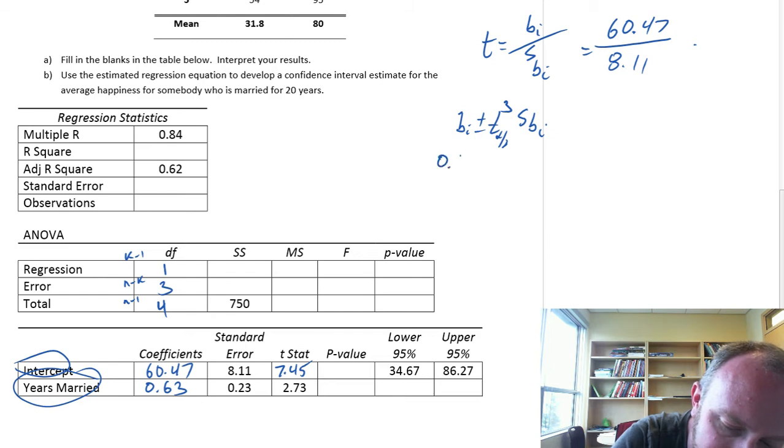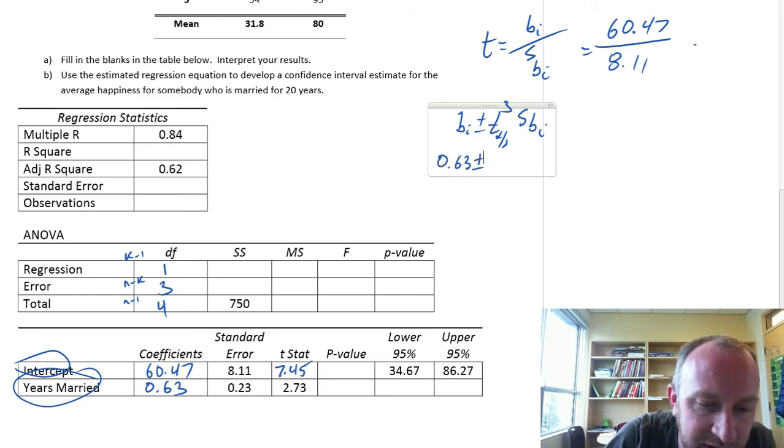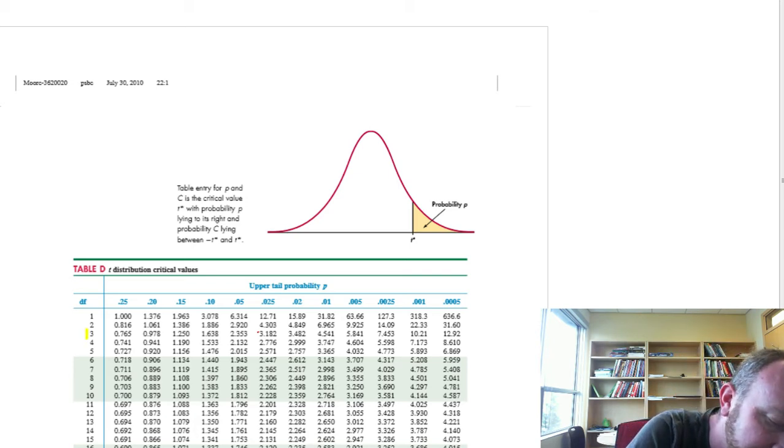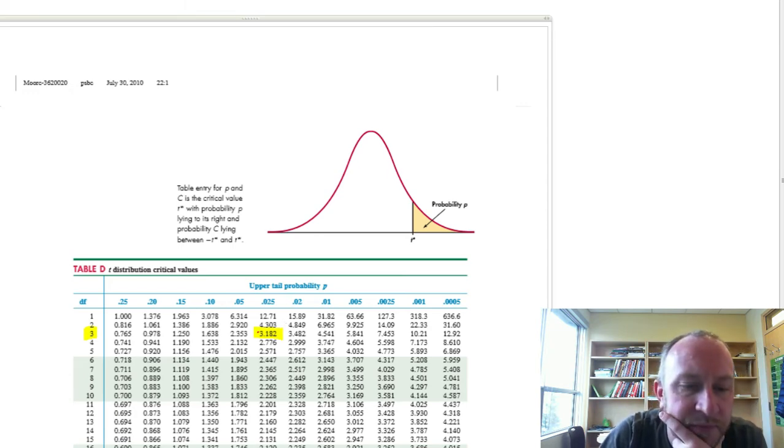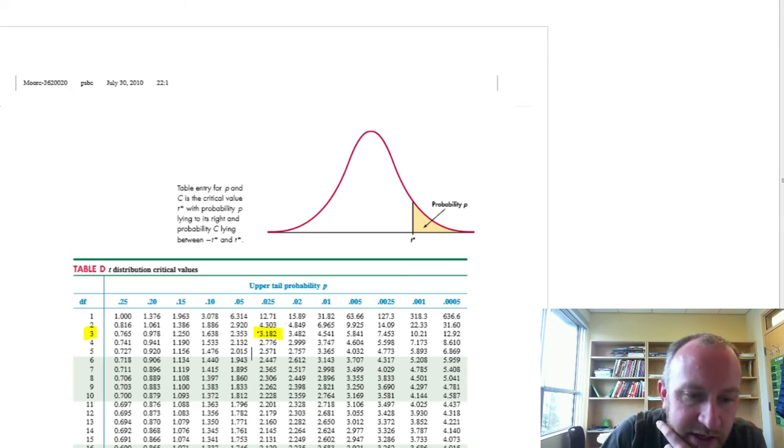There's our degrees of freedom for our relevant critical value for this confidence interval. This is going to be 0.63 plus or minus. This is going to be the same as we've used before. 3 degrees of freedom, alpha divided by 2 is 0.025. So 3.182.